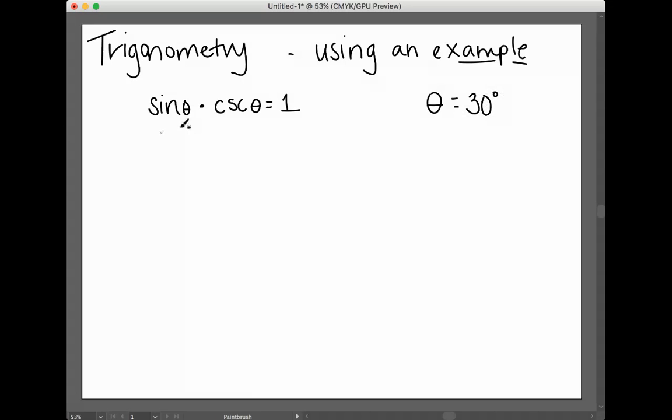You can use any angle you want here. So the idea is, let's see what happens if the angle is 30 degrees. Does the sine of 30 degrees times the cosecant of 30 degrees equal one? So that's what we're trying to figure out.